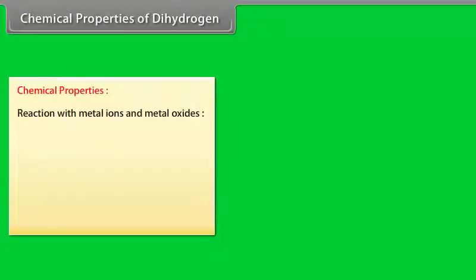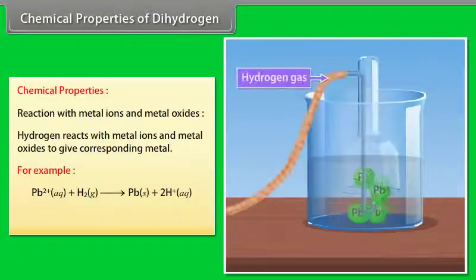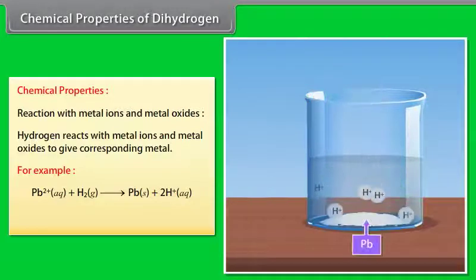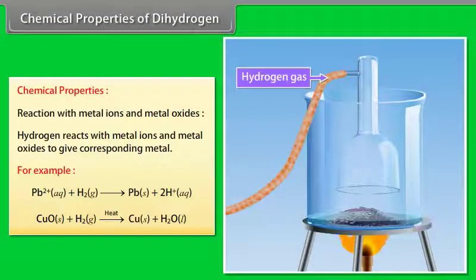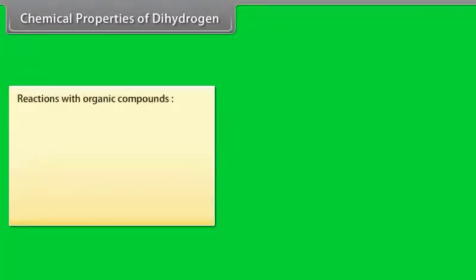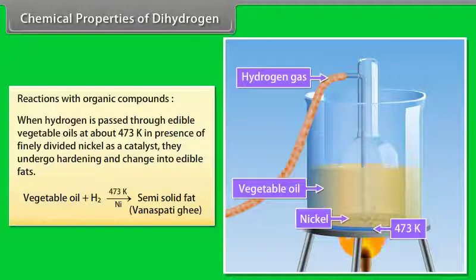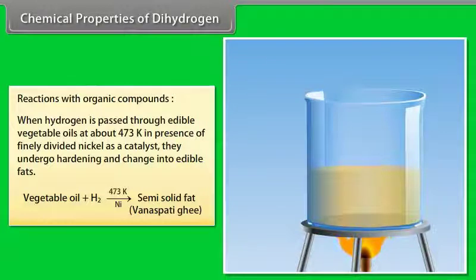Chemical properties of dihydrogen. Reaction with metal ions and metal oxides: Hydrogen reacts with metal ions and metal oxides to give corresponding metal. Reaction with organic compounds.